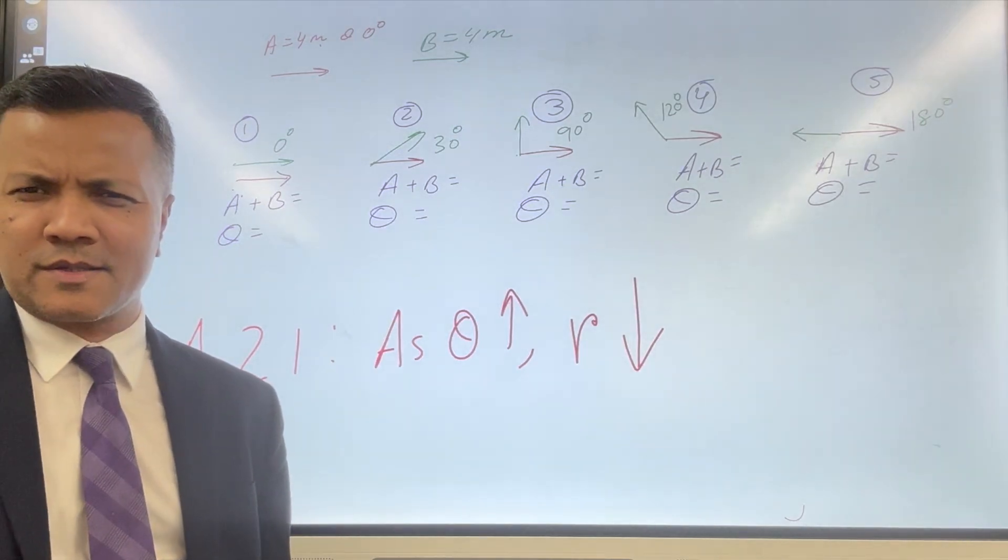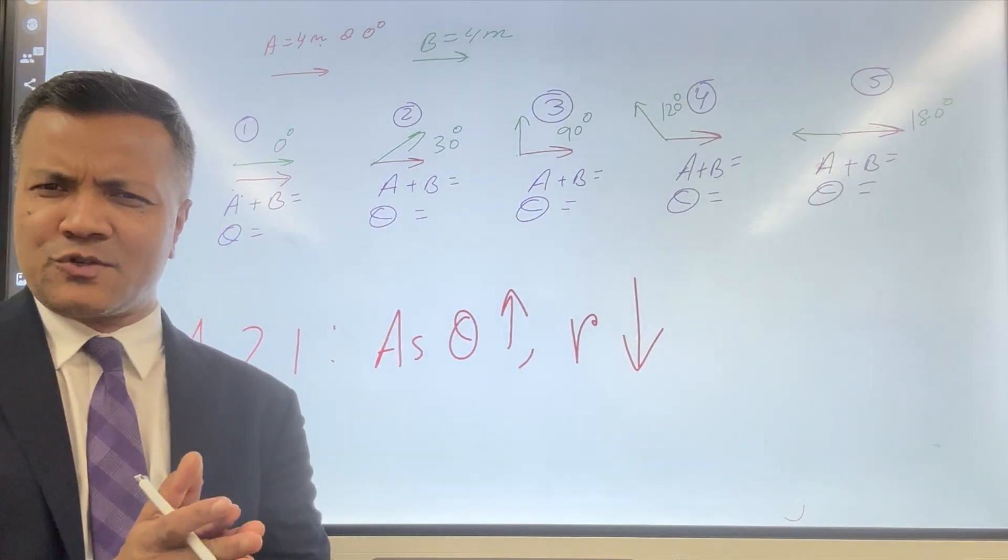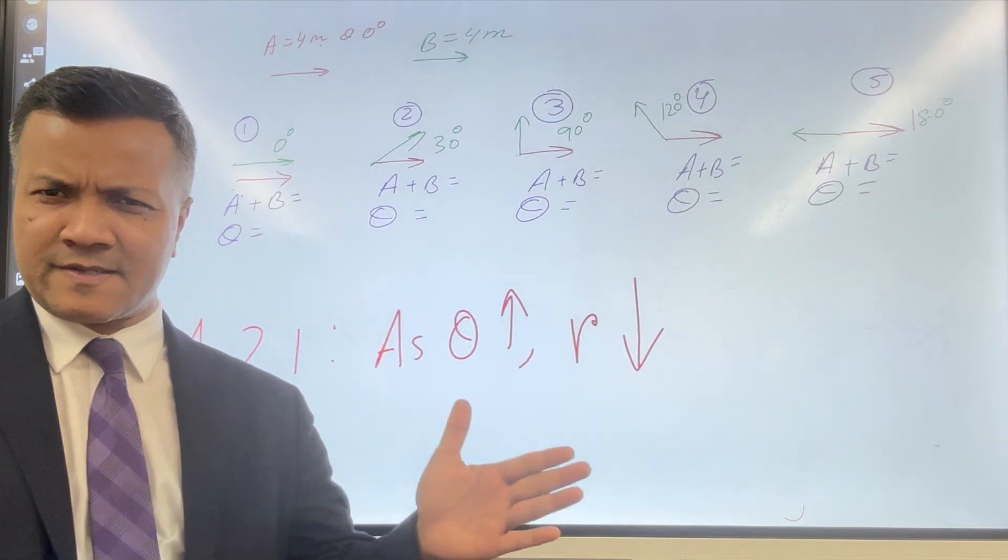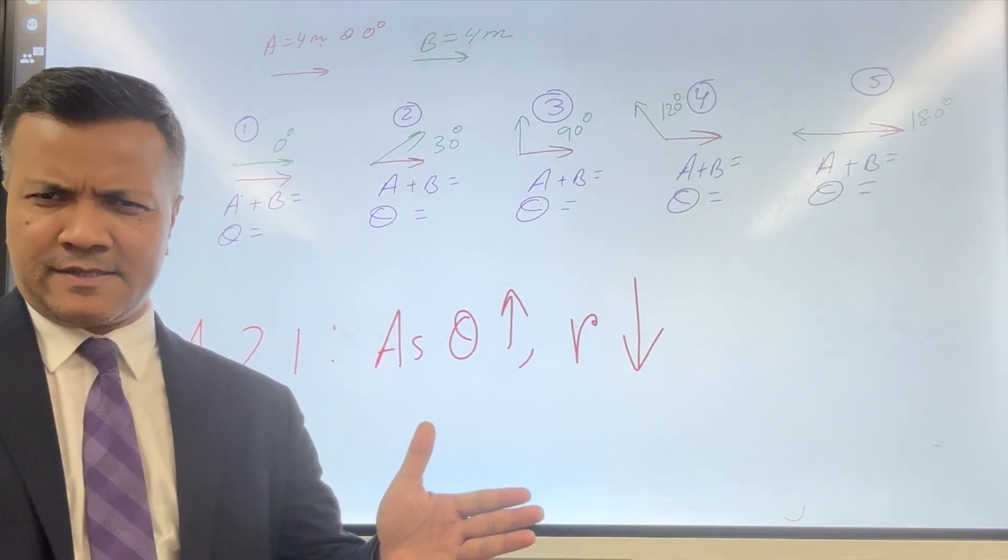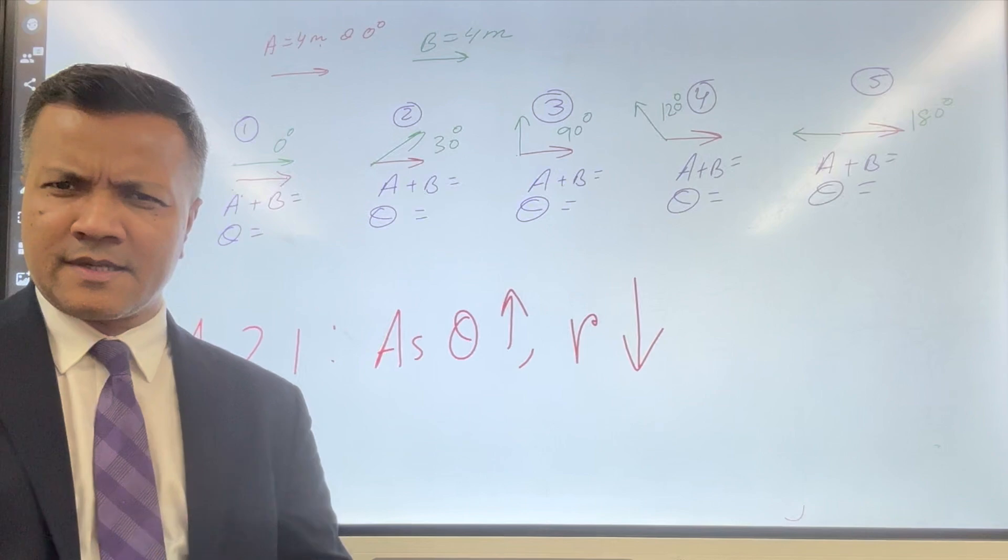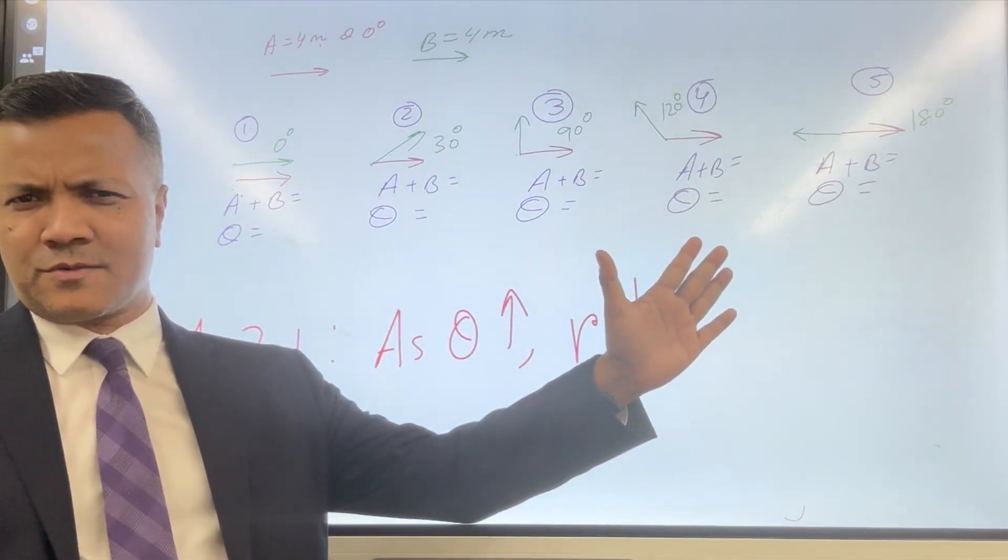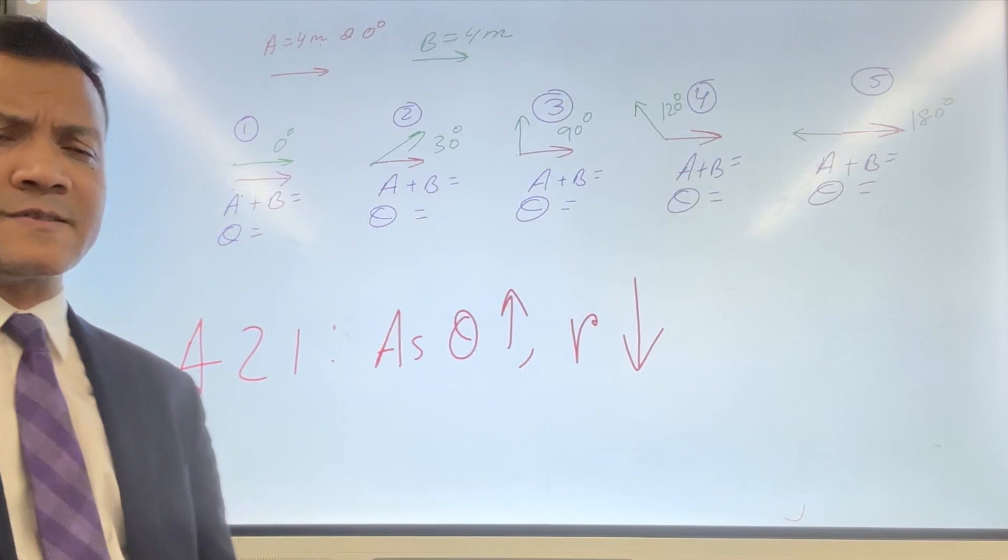Welcome to lesson number 21. Today our topic is as angle between two vectors increases, the resultant decreases, and we have five scenarios, five cases to check our hypothesis. So let's get started.